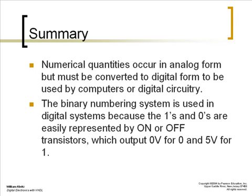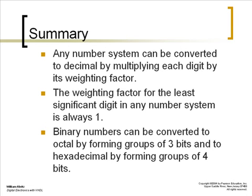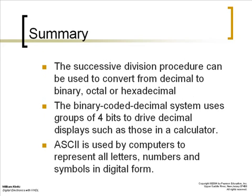In summary for Chapter 1, it can be said that numerical quantities occur in analog form, but must be converted to digital form to be used by computers or digital circuitry. The binary numbering system is used in digital systems because the 1's and 0's are easily represented by on or off transistors, which output 0 volts for 0 and 5 volts for 1. Any number system can be converted to decimal by multiplying each digit by its weighting factor. The weighting factor for the least significant digit in any number system is always 1. And binary numbers can be converted to octal by forming groups of 3 bits and to hexadecimal by forming groups of 4 bits. The successive division procedure can be used to convert from decimal to binary, octal, or hexadecimal. The binary coded decimal system uses groups of 4 bits to drive decimal displays such as those in a calculator.